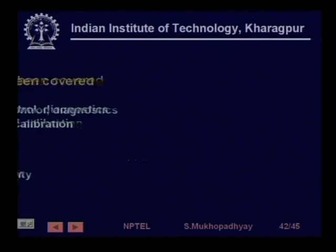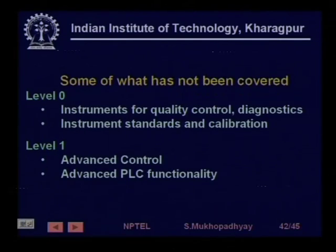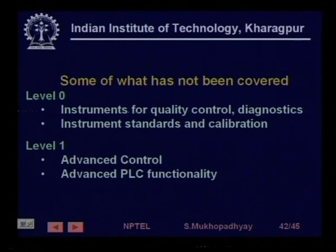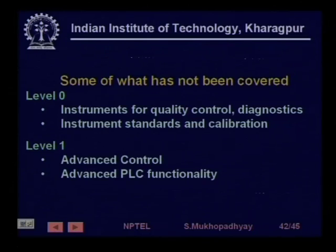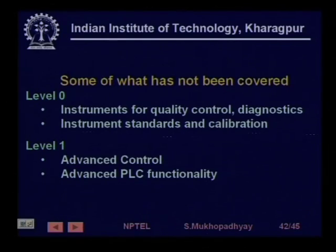That brings us to the end. Having discussed what has been covered, we should also take a look at what has not been covered so we are at least aware of what is also relevant. As mentioned, we mainly concentrated on levels 0 and 1, so levels 2 and 3 have not been covered in great detail. But even in levels 0 and 1, there are certain parts which could have been covered but could not.